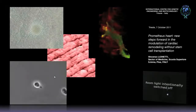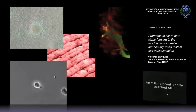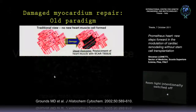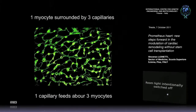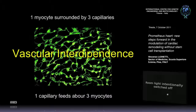These are cardiac fibroblasts coming into the bottom of the field, as you see — it is a time lapse. And in this case, you have a very well-organized structure, with a big vascular component that is also well-organized. As you see, one myocyte is surrounded by three capillaries, and one capillary feeds about three cardiomyocytes. This is a very important concept: the vascular interdependence, as in the lung. This network of vessels is strictly related to the function of the cardiomyocytes.